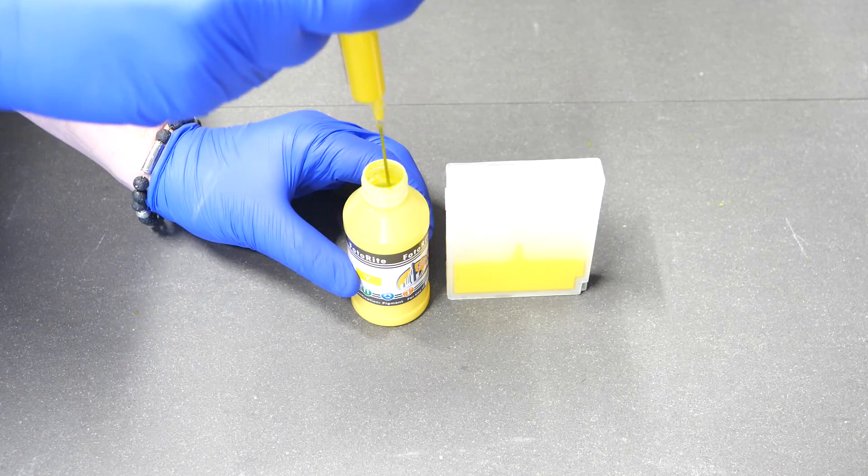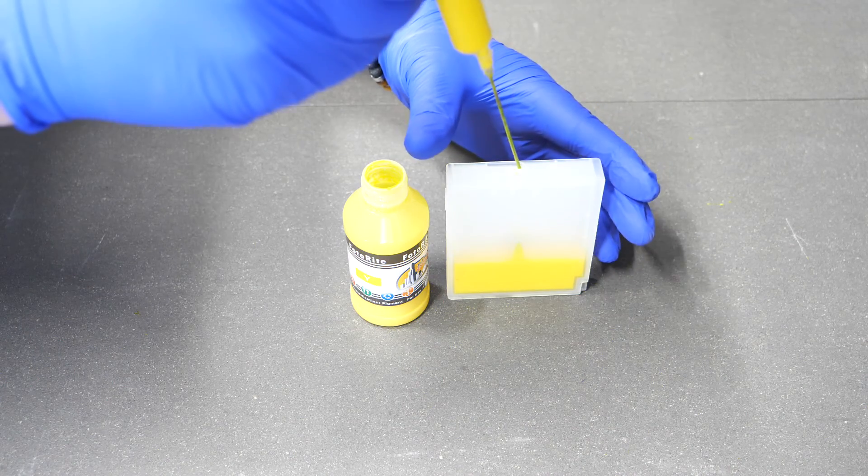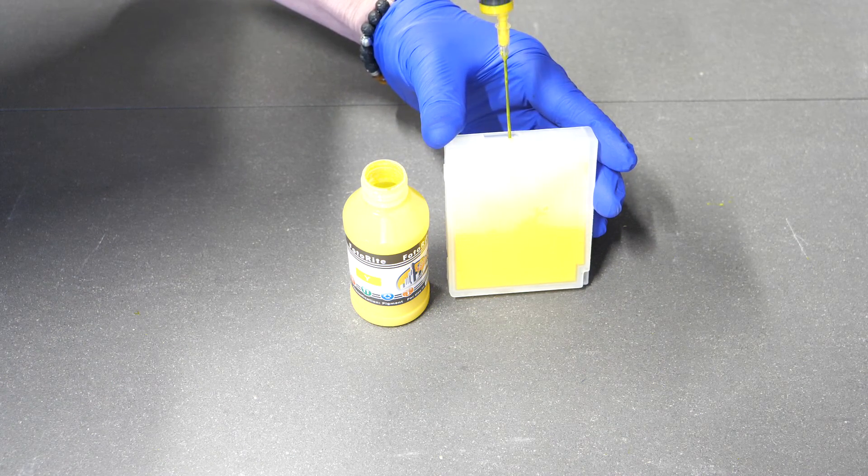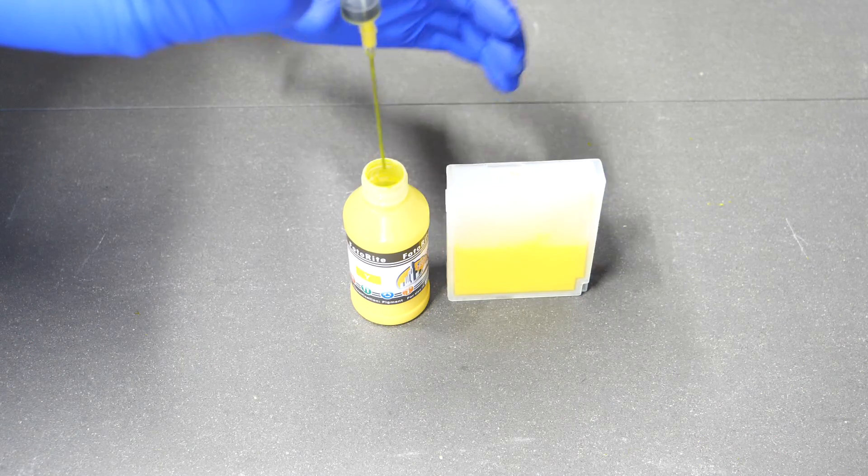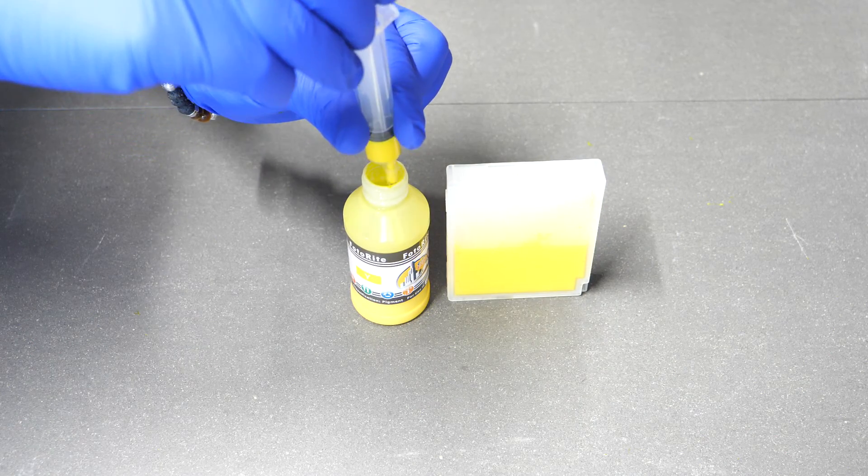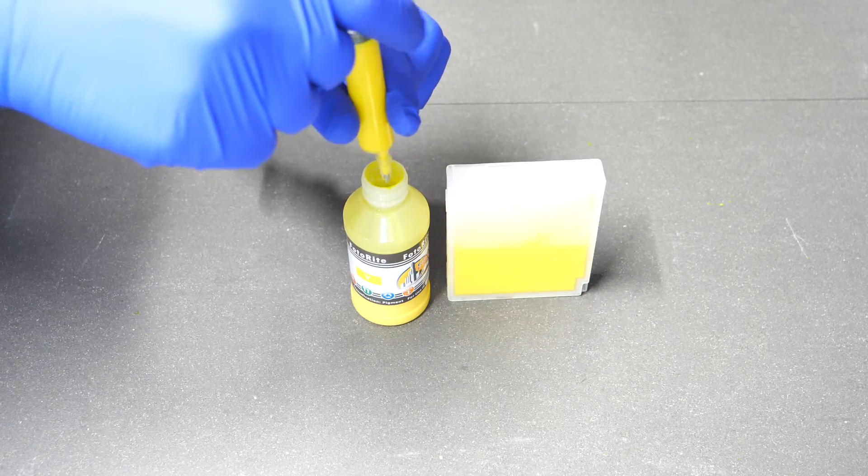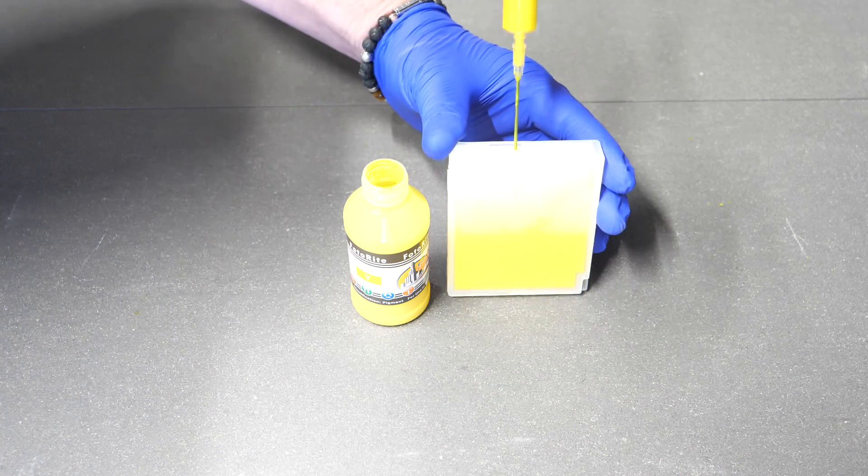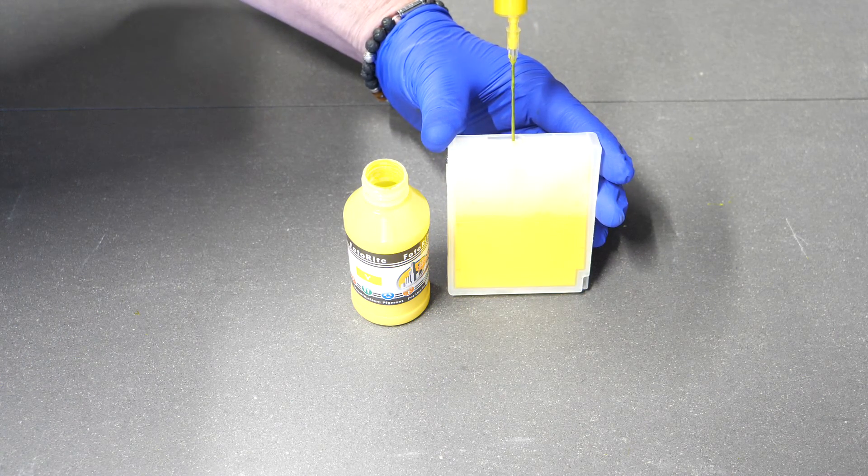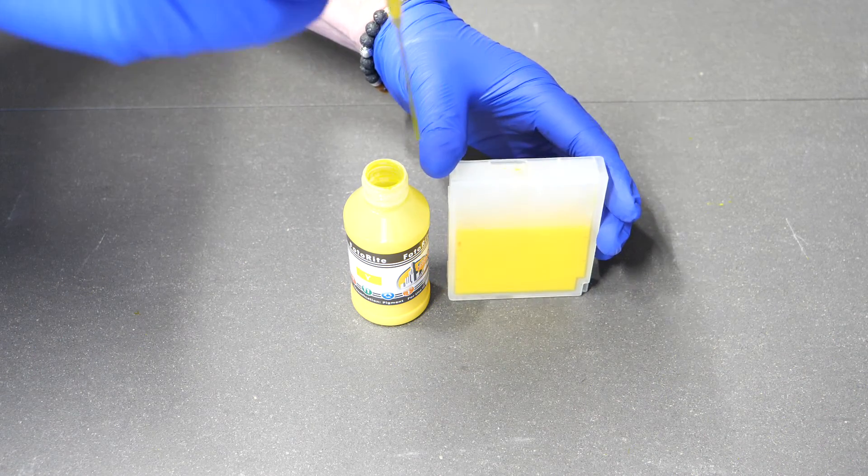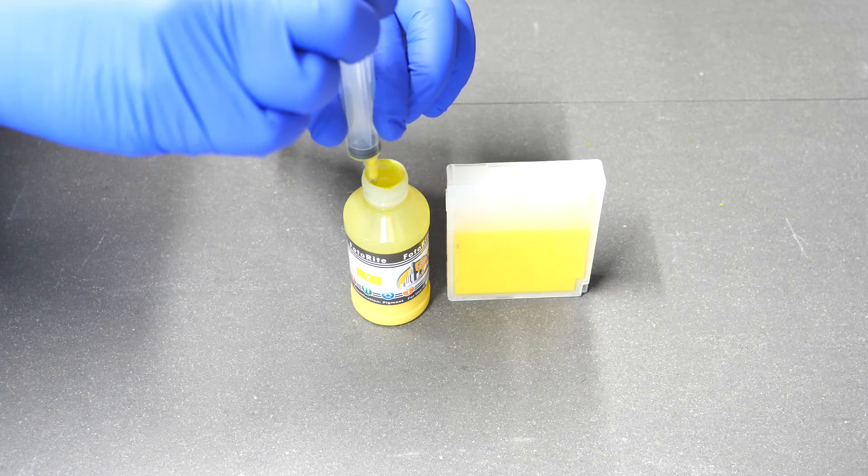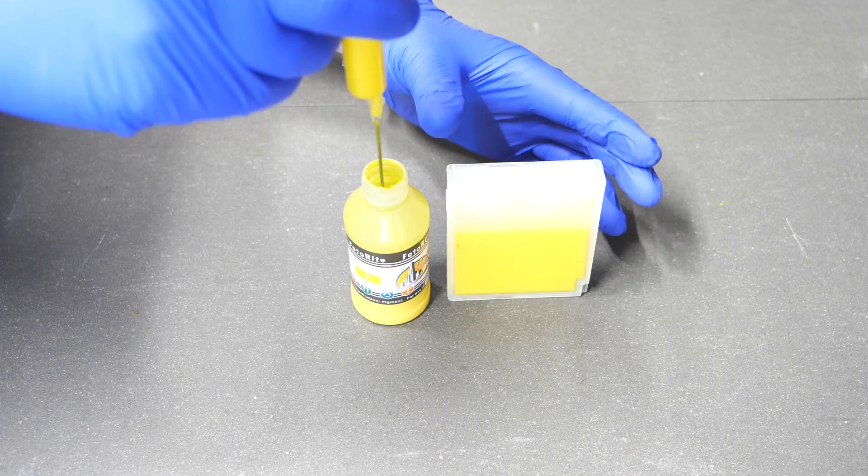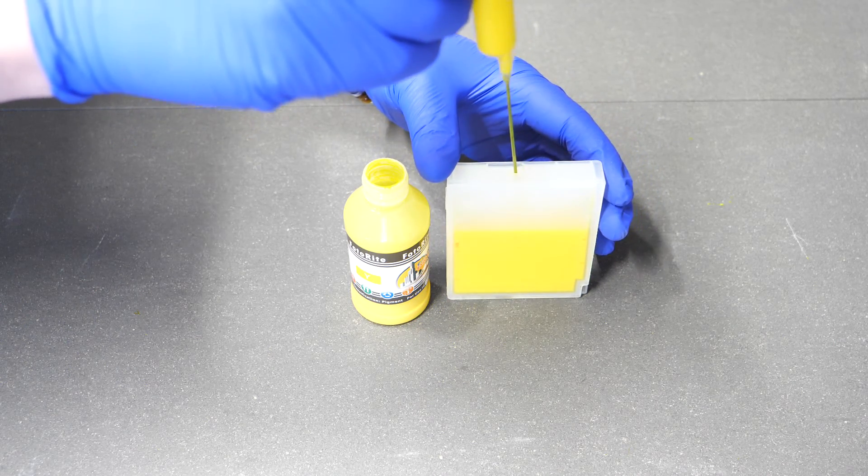The auto-reset function will only happen when it reaches 0%. So the number one rule with auto-reset cartridges, generally speaking, or ARC chips, is wait till it reports 100% empty and it's refusing to print. Remove, refill, and pop back in or reset, depending on what the reset procedure is.